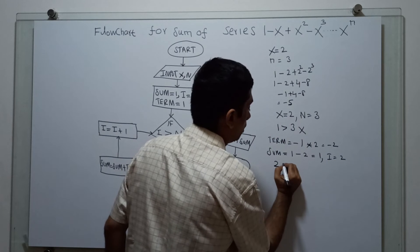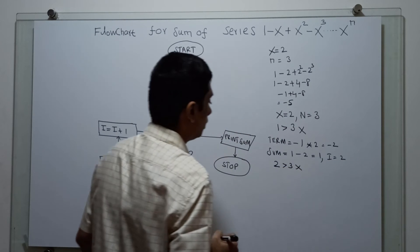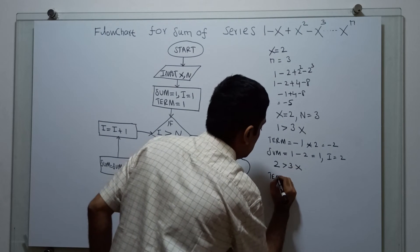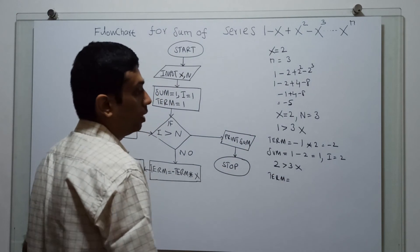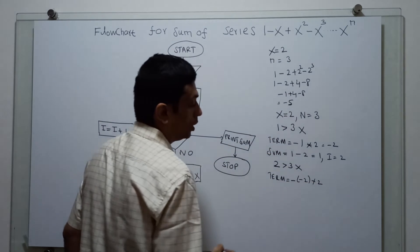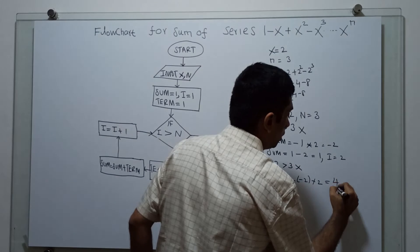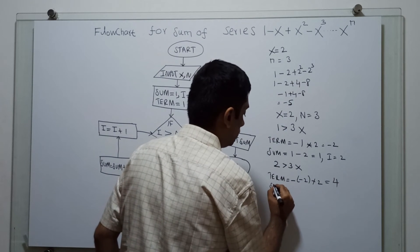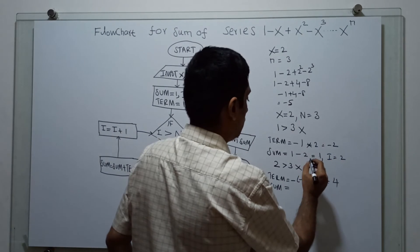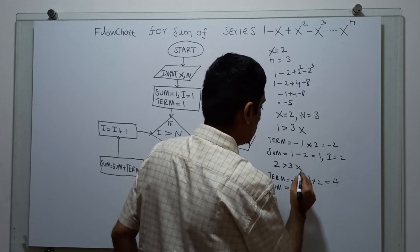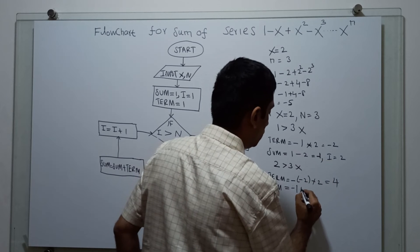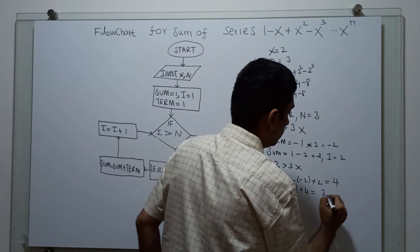Checking: 2 greater than 3 is false. Now term: existing value of term is minus 2, so minus of minus 2 into 2. Minus of minus 2 is plus 2; plus 2 into 2 equals 4. Sum: existing value of sum is minus 1, so minus 1 plus 4 equals plus 3.